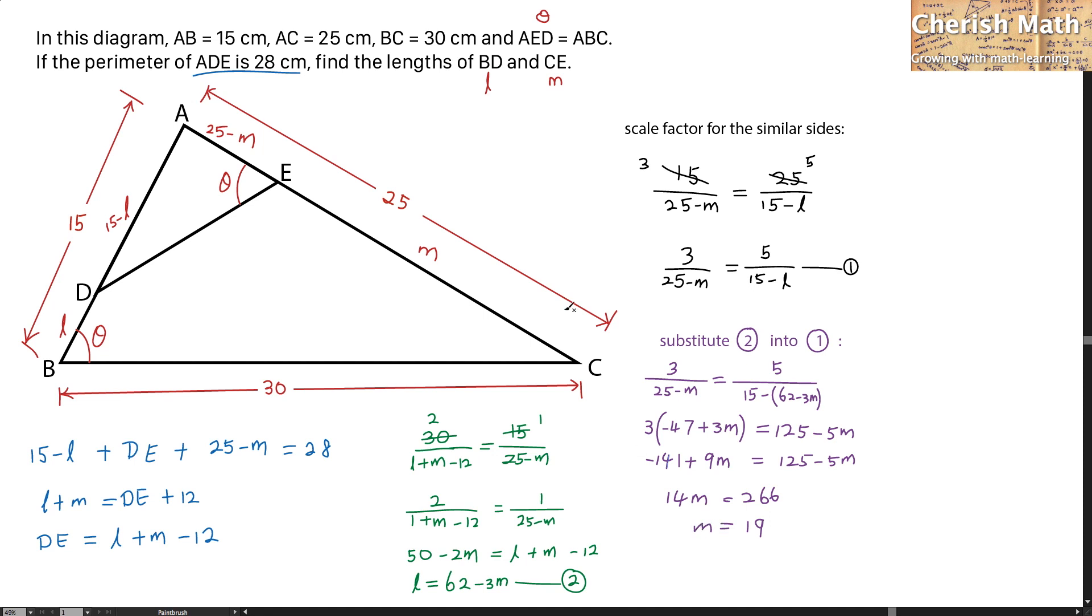The value of M that I got here is actually the same as CE, so CE is 19. And the value L I'm going to get as 62 minus 3 times 19, so I got the value L as 5, and the value L is the same as BD. We solved the whole puzzle.